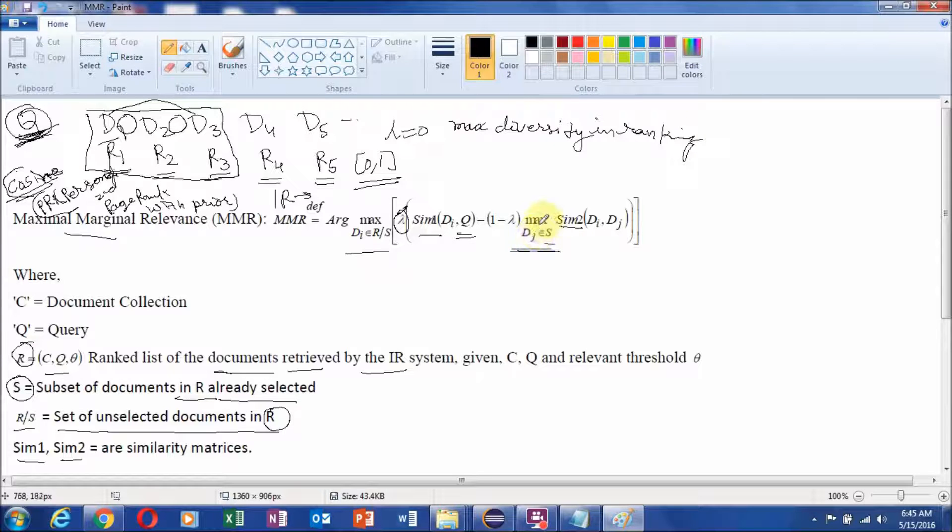So dj is a member of S. We will calculate this for all dj which are member of S means subset of documents in R which are already selected and di member of R\S means all the new documents which are not selected or contains in the list of non-selected documents.